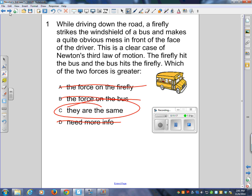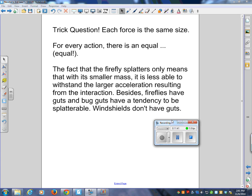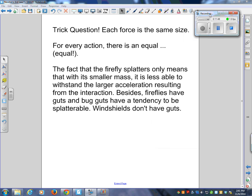Lucas is making a very valid point. For every action, there is an equal and opposite reaction force. The fact that the firefly splatters only means that with its smaller mass, it is less able to withstand the larger acceleration resulting from the interaction. Besides, fireflies have guts and bug guts have a tendency to be splattable. Windshields don't have guts. They don't splat. I'm really certain that a firefly is not going to smash a windshield because it's very tiny. But the forces are the same.